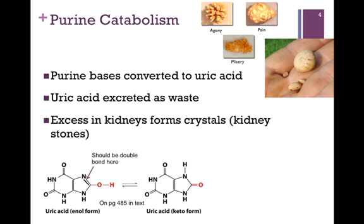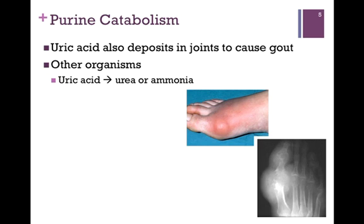If there is a disruption in purine catabolism, uric acid can accumulate, and the excess in the kidneys results in the formation of crystals known as kidney stones. We have an illustration of different sizes of kidney stones in the upper right. As you can imagine, the size of the kidney stone would certainly correlate with great difficulty in passing them. But not just the size relates to a painful process — also the shape, as humorously indicated at the top of the slide: depending on the shape, it can result in pain, misery, or absolute agony.